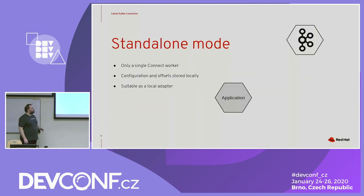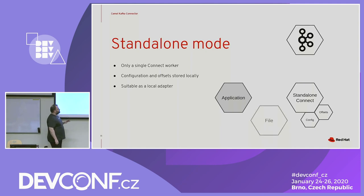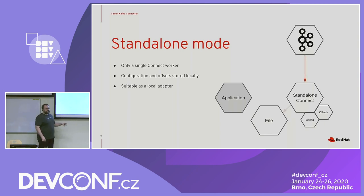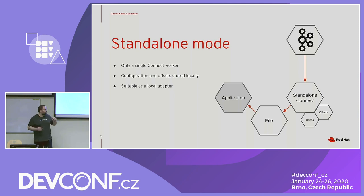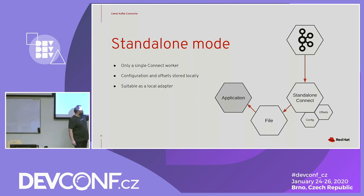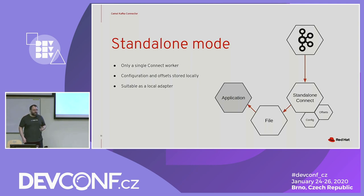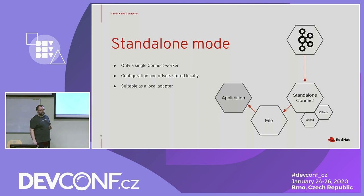Kafka Connect runs in two different modes. In standalone mode, there is a single worker with a local configuration file; it creates the connector and stores offsets locally. This is useful, for example, if you have an application running on a VM that needs to read data from a Kafka topic and dump it into a file. In the OpenShift or Kubernetes world, you can imagine this as a sidecar pattern with multiple containers in the same pod.